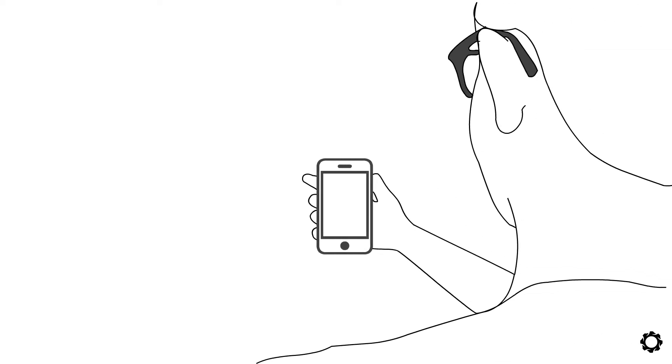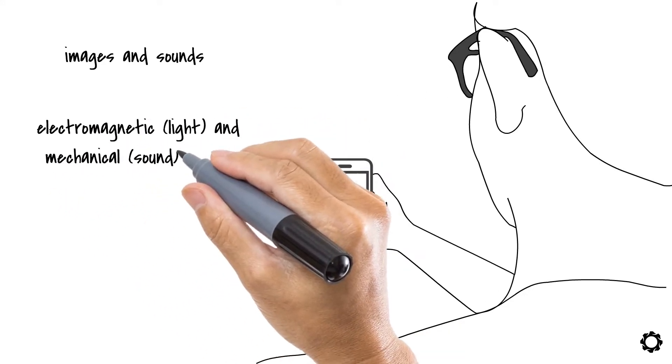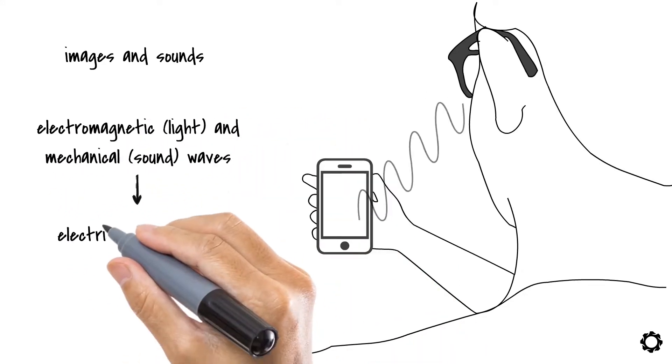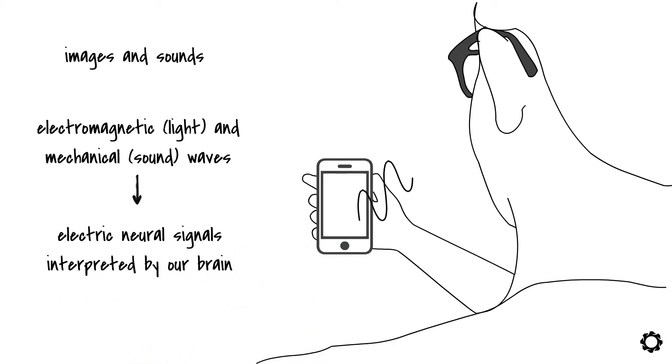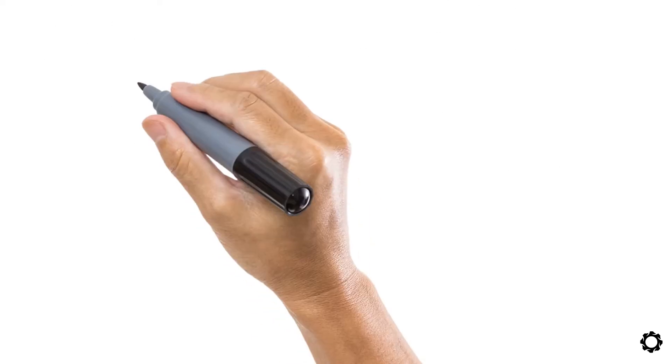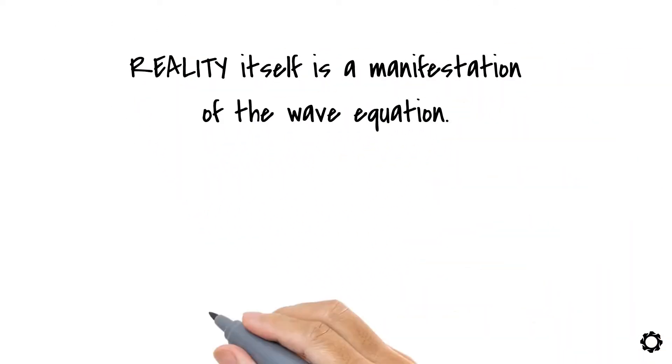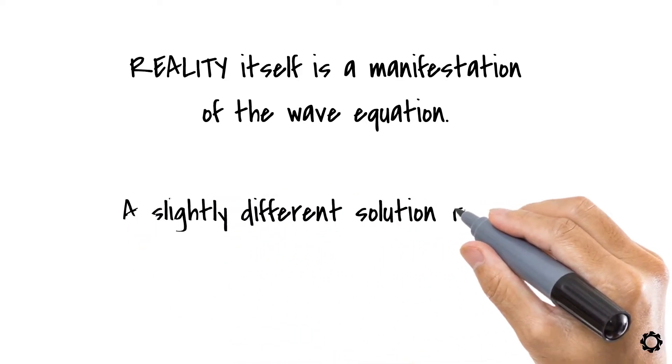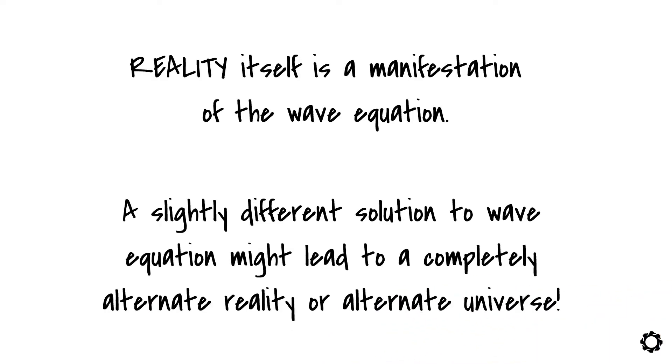We are seeing and listening to images and sounds because our eyes and ears can convert electromagnetic, light, and mechanical sound waves into electric neural signals interpreted by our brain. So our perception of reality is based on our ability to decode or encode information in the waves. You will find that reality itself is a manifestation of the wave equation.